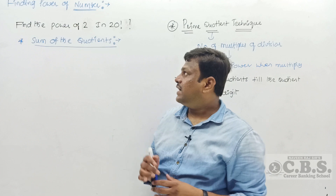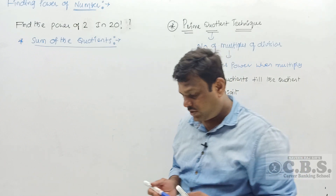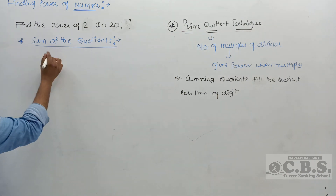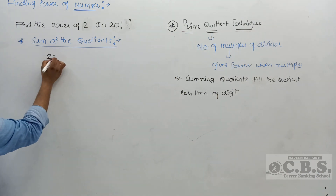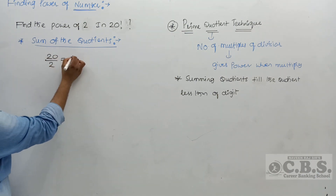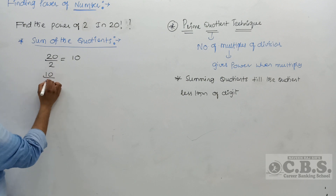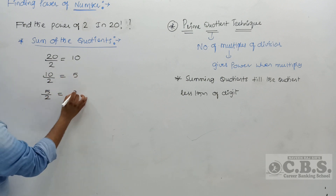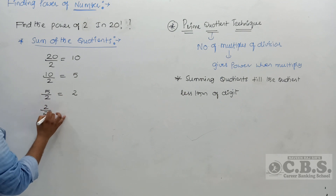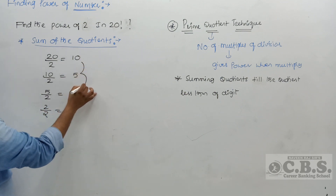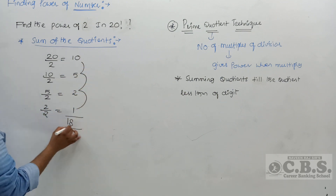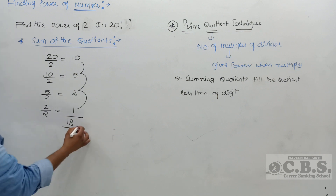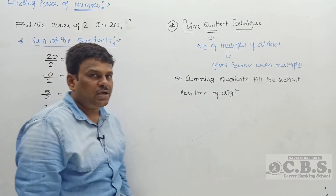Next, find the power of 2 in 20! using the sum of quotients technique. 20 ÷ 2 = 10; 10 ÷ 2 = 5; 5 ÷ 2 = 2; 2 ÷ 2 = 1. Summing: 10 + 5 + 2 + 1 = 18. So the power of 2 in 20! is 18.